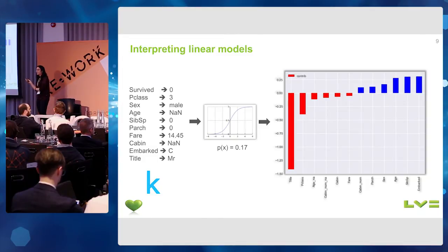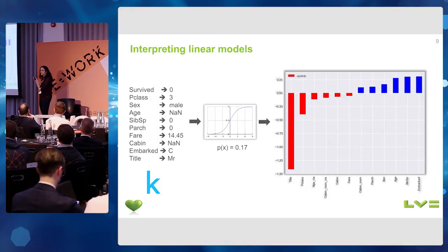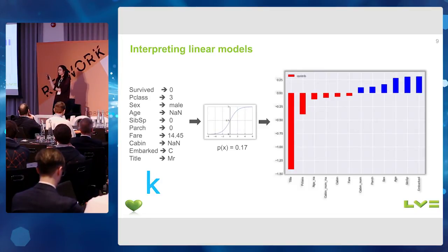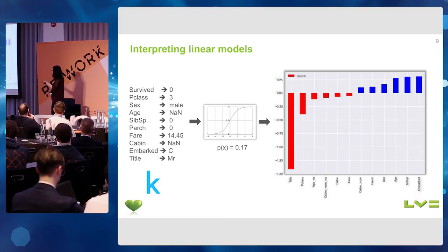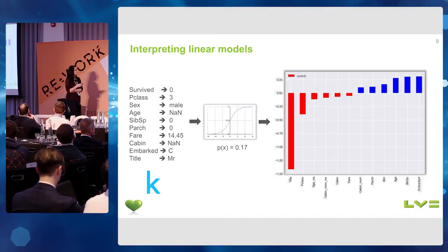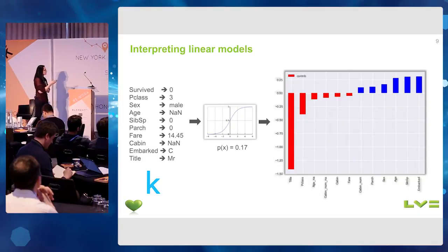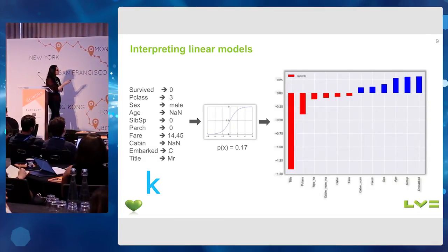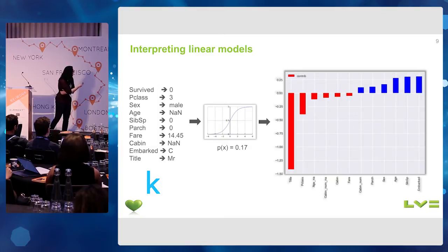For this particular customer, if we multiply the input variables by the coefficients fitted in the logistic regression, we can produce a plot like the one shown on the right, where I indicate in red the variables that contributed to decreasing the probability of survival for this particular passenger. We can see that the fact the customer was a mister, indicated by the title, and was traveling in third class, decreased his probability of survival. In blue, I indicate the variables that were not so important — in fact they increased it a little, like for example the port of embarkation, which is not a very important variable.